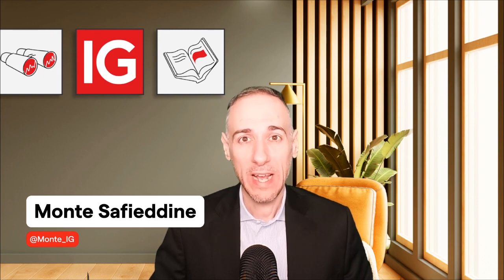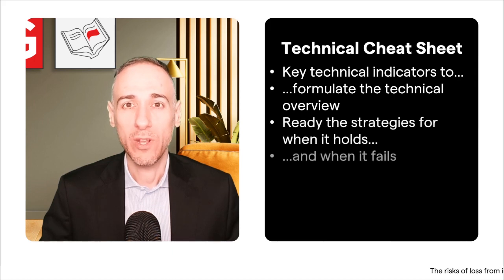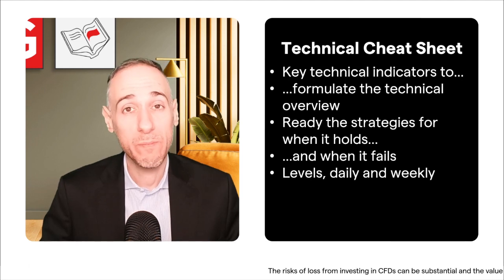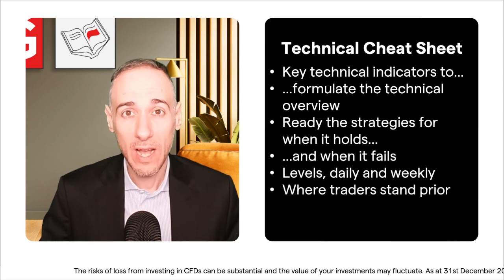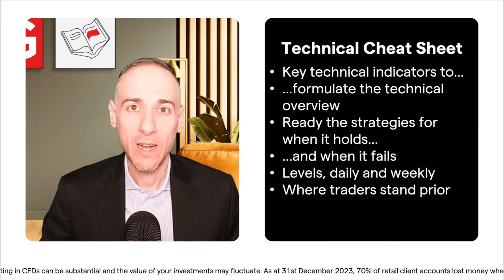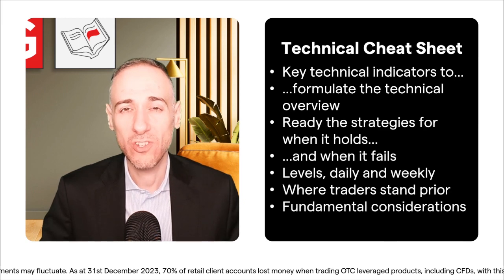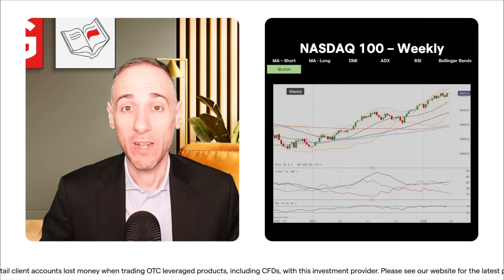This week we're getting technical with the tech-heavy NASDAQ 100. This is the technical cheat sheet video where we look at key technical indicators to formulate the overall technical overview, ready strategies for both conformist and contrarian camps, and prep levels on daily and weekly time frames. We also consider where traders stand on both sides, with retail traders majority short and COT speculators slightly long, plus key fundamental themes in tech.